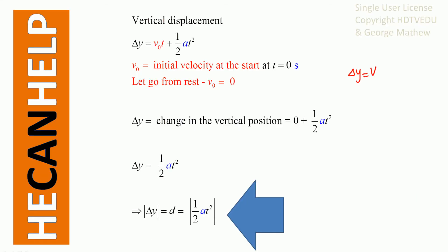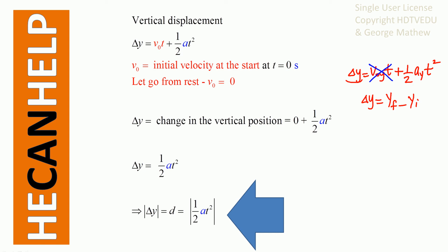Delta y equals v₀yt plus one-half times at squared. Delta y is the change in vertical position, and delta y equals y final minus y initial. The initial vertical velocity at the start is 0. The acceleration along the vertical is negative 9.8, provided you define positive x horizontally and positive y as vertically up.